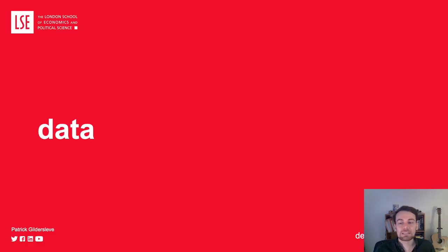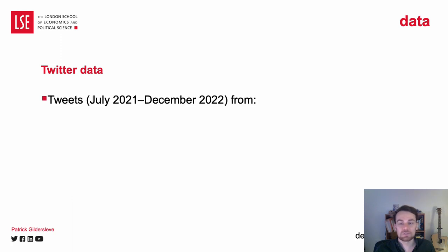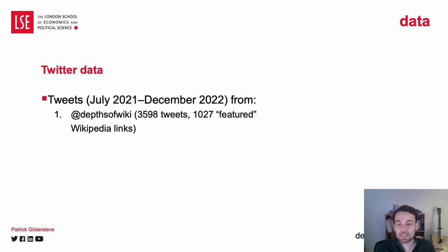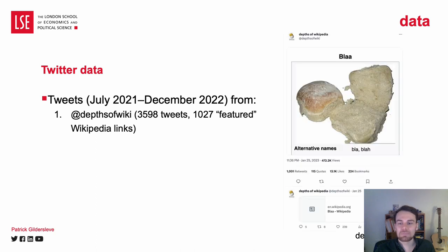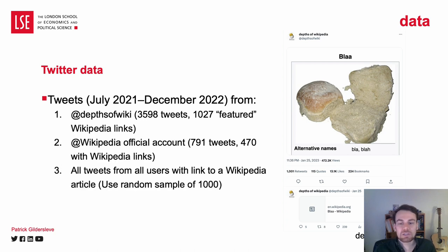The data I collect is from Twitter and Wikipedia. I collect tweets over an 18-month time period from three sources: the Depths of Wikipedia account, where a typical post has a screenshot and a link in a follow-up tweet; the official Wikipedia account; and tweets from all users with a Wikipedia link in them. For this version of the study, I only look at the time period above, but I actually have all of this data going back to 2020.